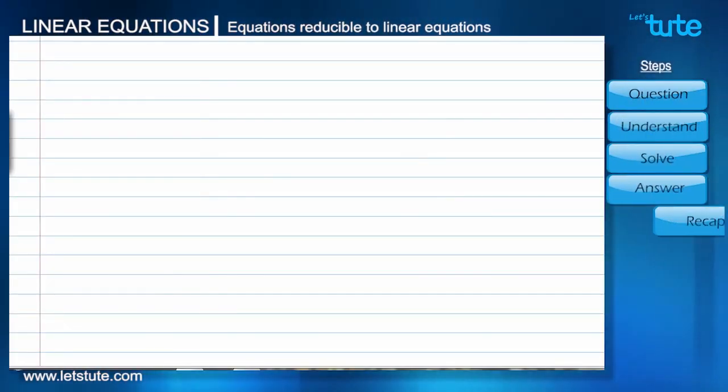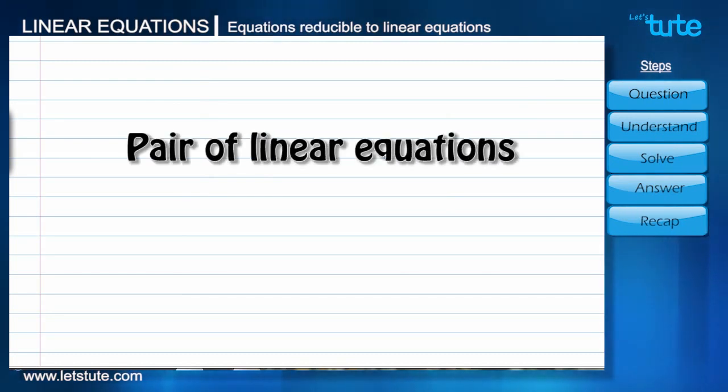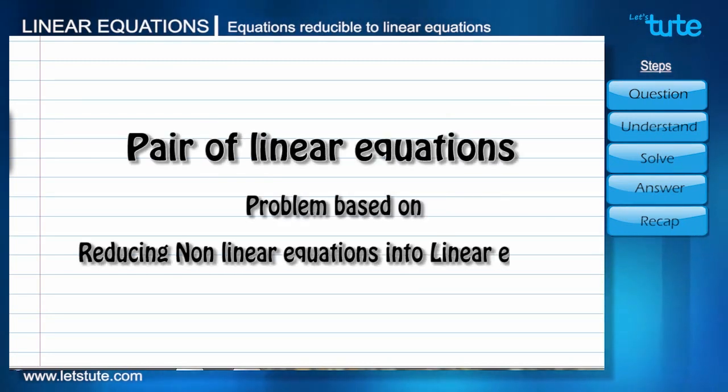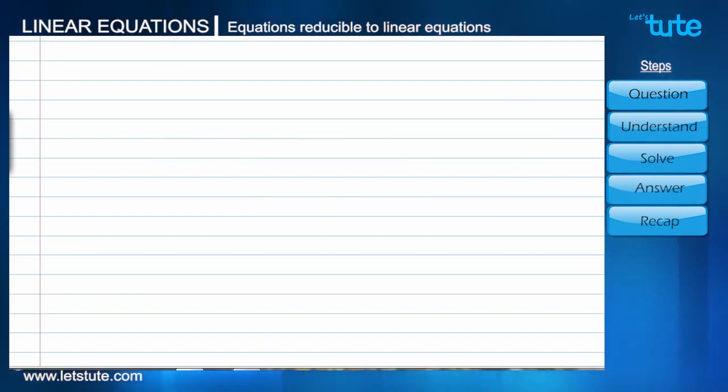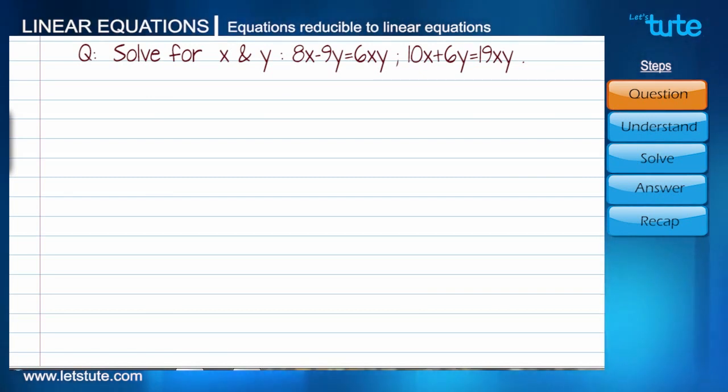Hello everyone. In this session of pair of linear equations, we'll solve a problem based on the concept where we reduce different equations to pair of linear equations to get the values of the variables. Here is the question. Solve for x and y: 8x minus 9y equals 6xy, and 10x plus 6y equals 19xy.